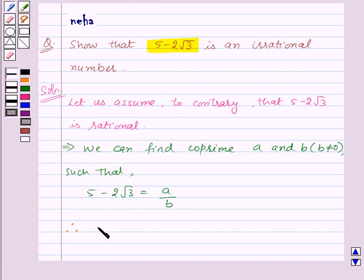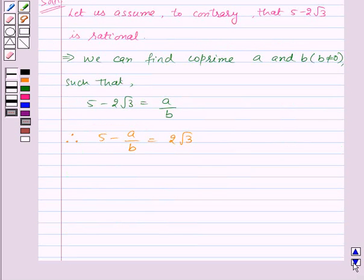Therefore we will get 5 minus a upon b will be equal to 2 root 3. This implies 5 upon 2 minus a upon 2b will be equal to root 3. That is root 3 will be equal to 5b minus a upon 2b.